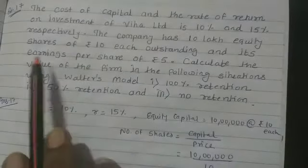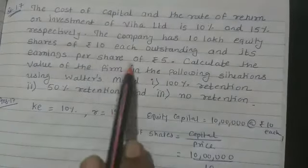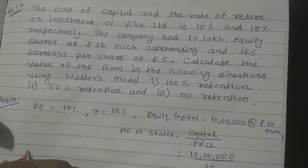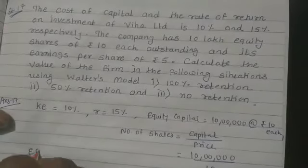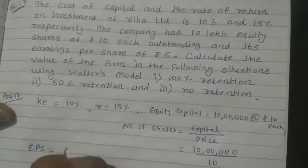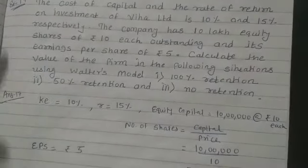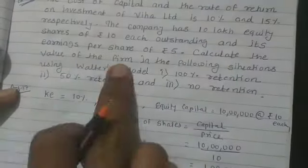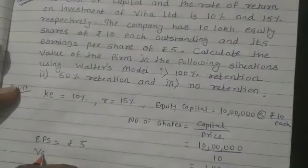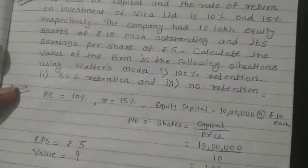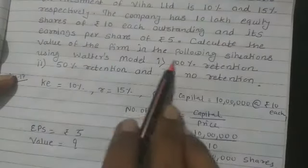The earning per share (EPS) is rupees 5. We need to calculate the value of the firm in the following situations using Walter's model.